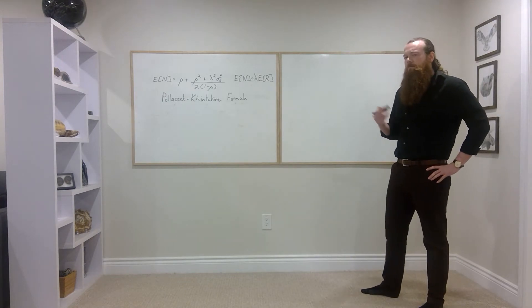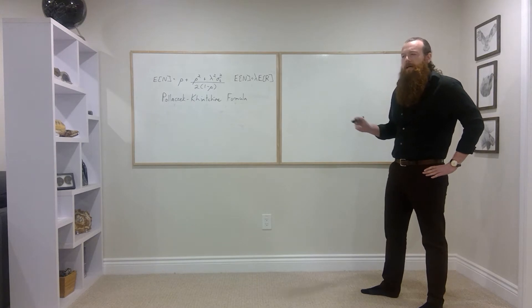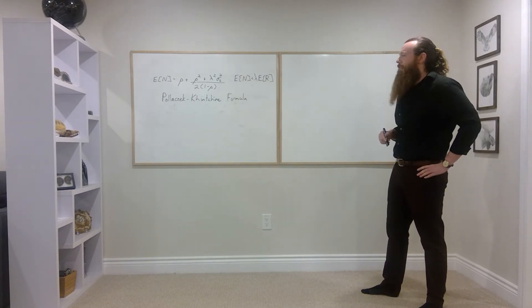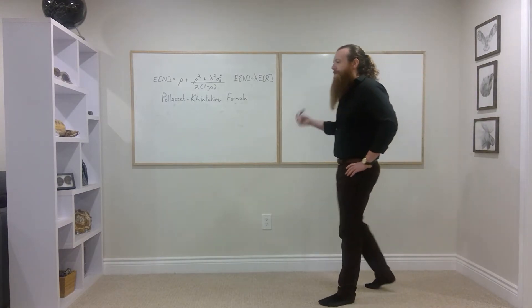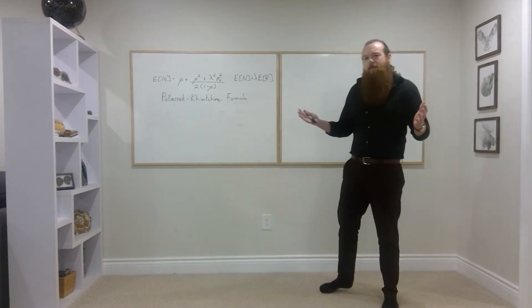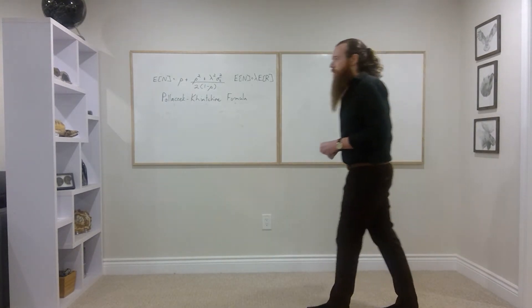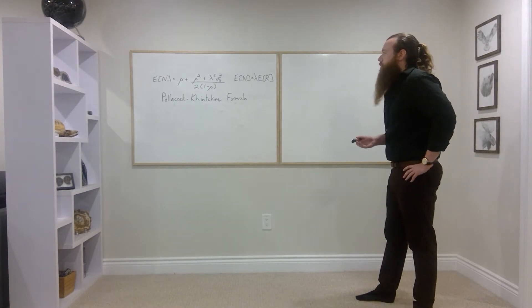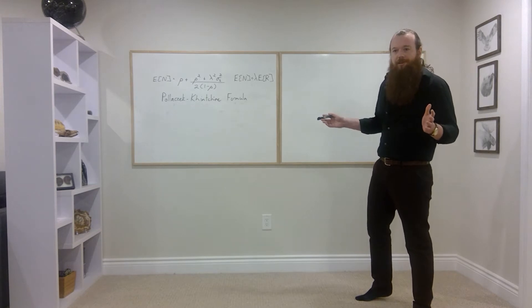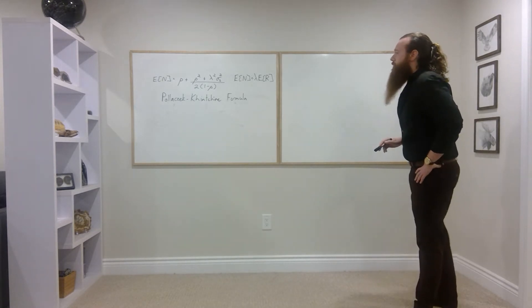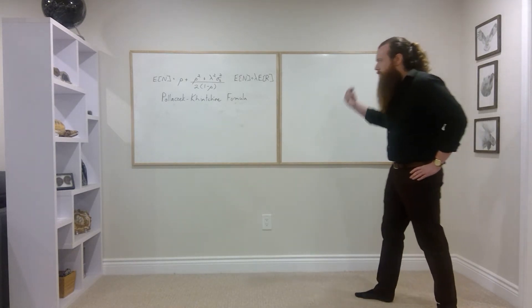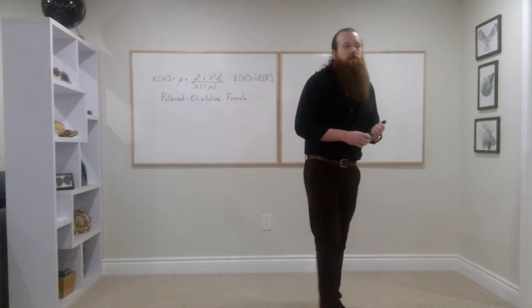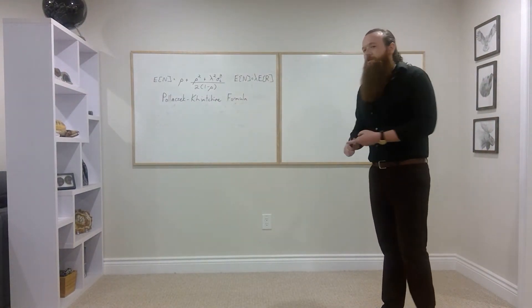Welcome back. We're capping the lecture off with one more section. Last time we looked at the MG1Q and tried to derive an expression — a formula — for the expected number of jobs in the system. We were able to do that using an embedded Markov chain approach. What we learned is that we can arrive at a closed-form expression, and we only need to know two things about the service time distribution: the mean and the variance.